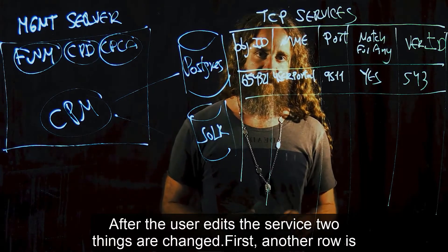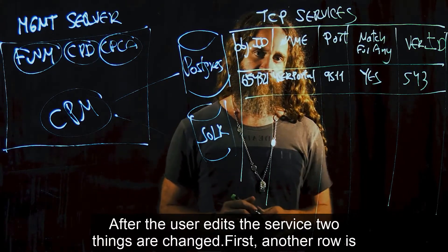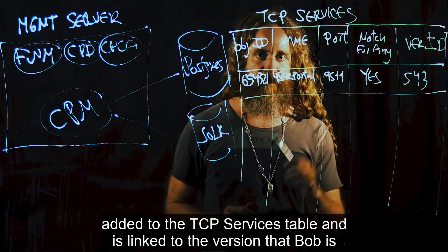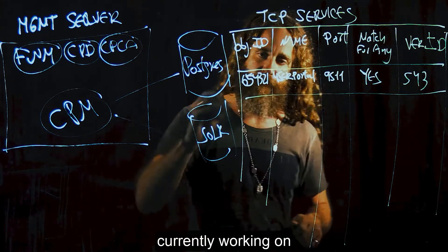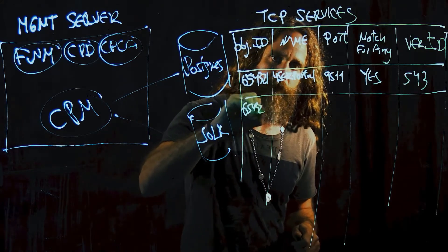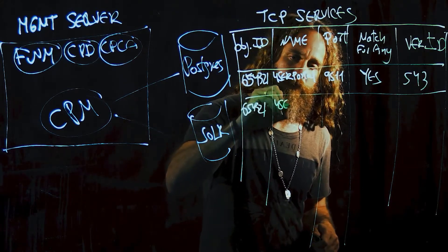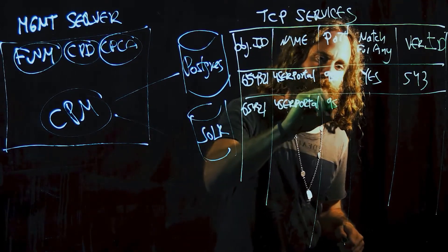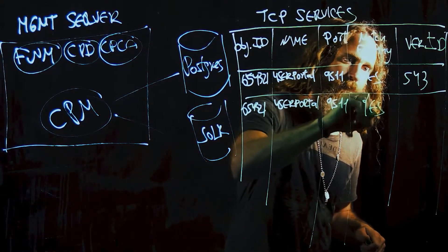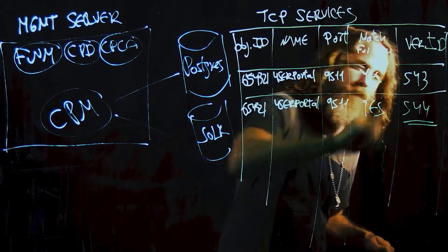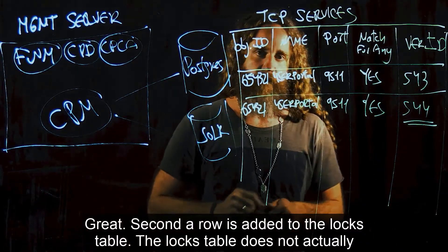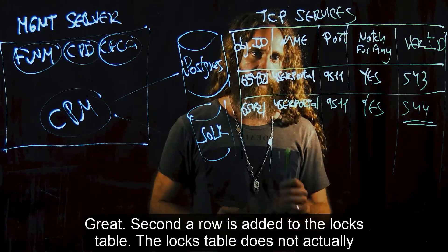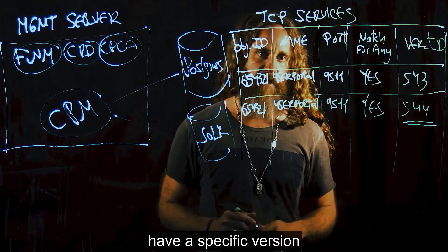After the user edits the service, two things are changed. First, another row is added to the TCP services table, and it's linked to the version that Bob is currently working on. Second, a row is added to the LOCKS table.